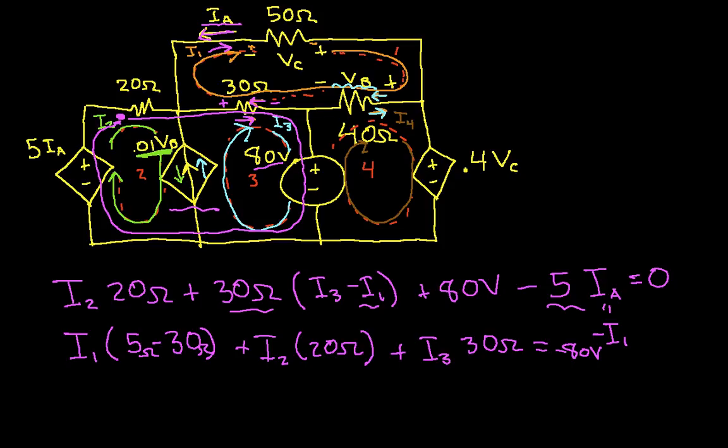Okay, so we start here, and we go plus to negative. We have 0.4 VC. Then we go all the way around here to this source. We've got negative to plus. We have minus 80 volts. And then we have I4 going this direction, I1 going this direction through the 40 ohm resistor. So we have 40 ohms, I4 minus I1. And this is equal to 0.